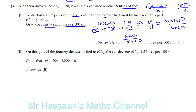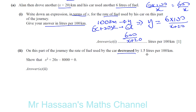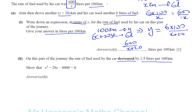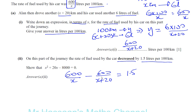Now part two. On the second part of the journey, the rate of fuel used decreased by 1.5 liters per 100 kilometers, and we have to show that a given equation is true. The rate from the first part, 600 over X, is higher than the rate from the second part. So if I subtract 600 over (X plus 20) from 600 over X, that should give 1.5 liters per 100 kilometers.